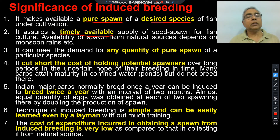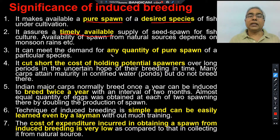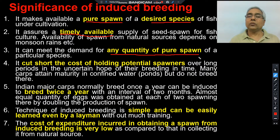In the natural environment, fishes do not breed until favorable conditions develop. Whereas by induced breeding technique, we can decide when we want these seeds for culture purposes and schedule accordingly which fishes to induce for breeding. Thirdly, we can get any desired quantity of pure spawn. Whatever quantity of fish seed we need — whether rohu, katla, or mrigal — we select the appropriate fishes and induce only those fishes for breeding. In natural environments, we cannot know what variety or quantity of fish seed we will get.